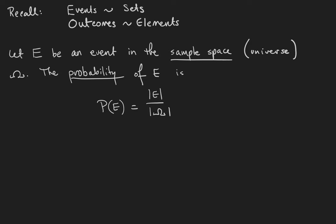We're going to end our videos about combinatorics with some videos about probability. Remember that events are sets, and outcomes are elements of those sets.